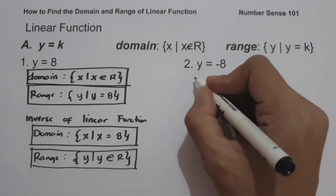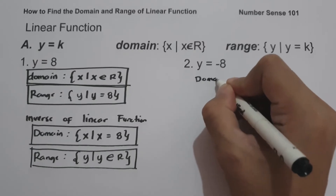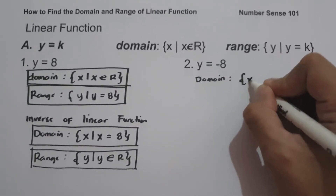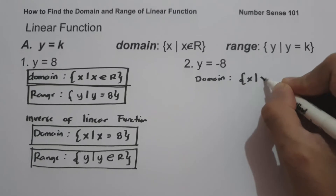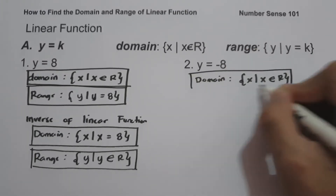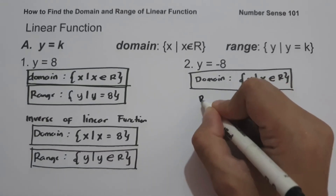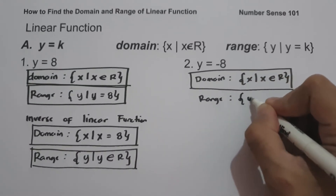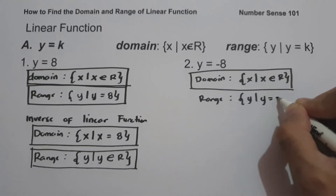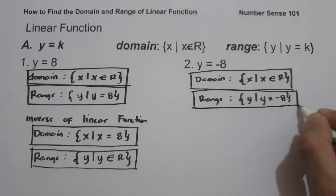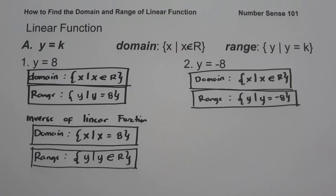For example number two, we have y equals negative 8. As you can see, the value of k is negative. To write the domain: the domain is the set of values of x such that x is the set of all real numbers. And to write the range: the range is the set of y values such that y equals negative 8. This will be our range.